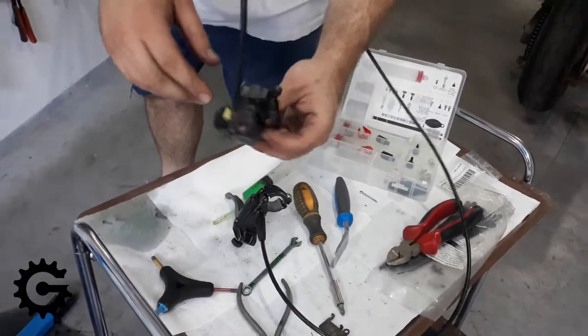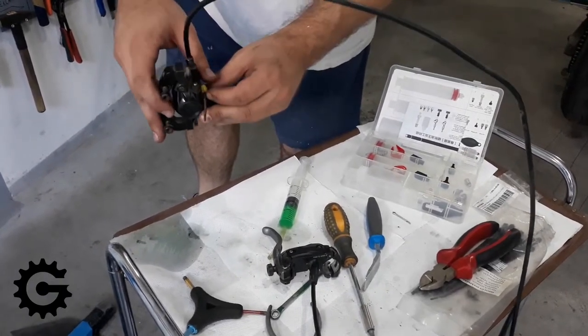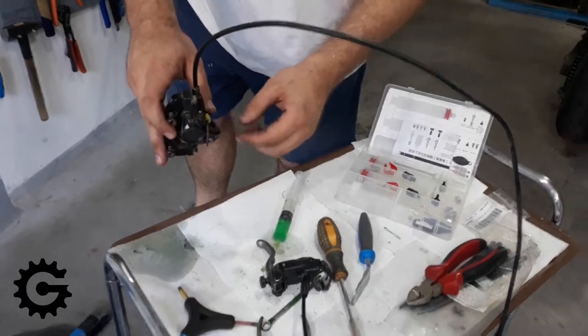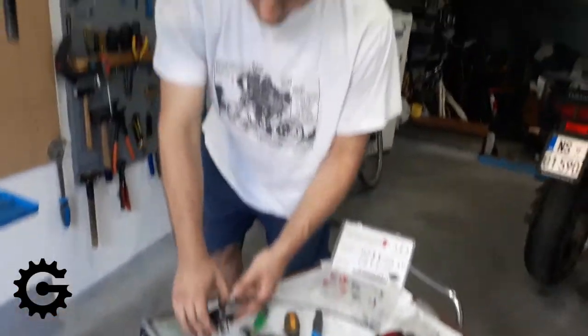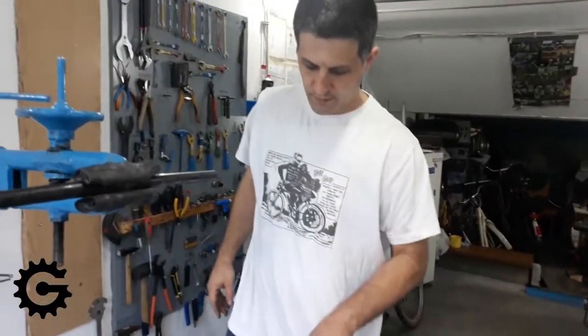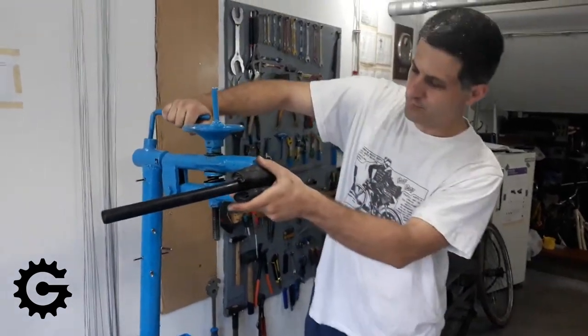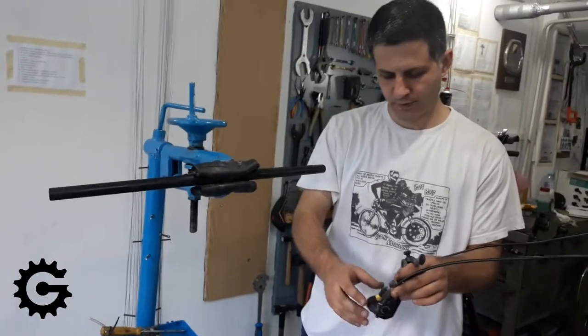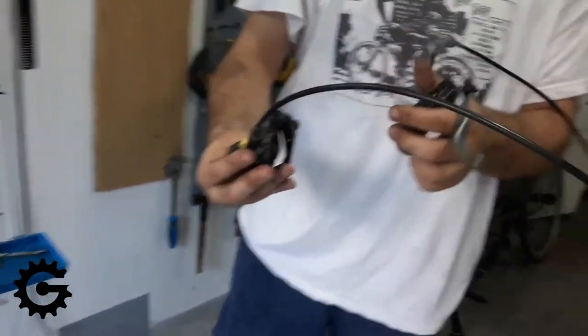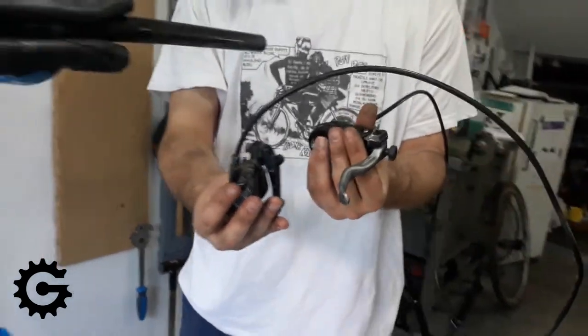The bleed screw of the caliper needs to be facing upwards so that any air can freely go out of the system. We don't want it parallel to the ground or bottoms up. When mounted on a bicycle, sometimes you need to rotate the bicycle stand to make it properly set. I will mount this on the stand so it's parallel to the ground and the air is on top.